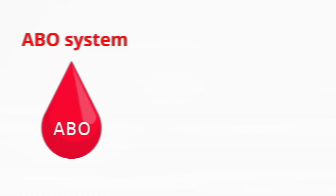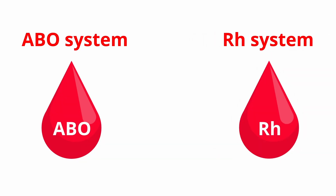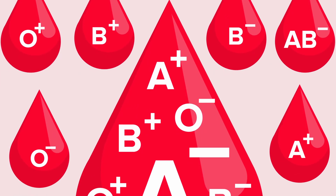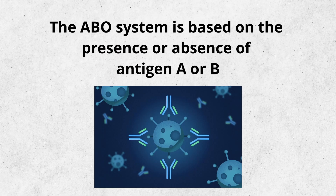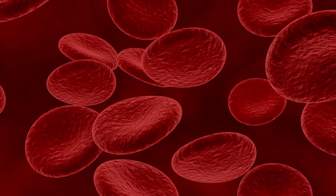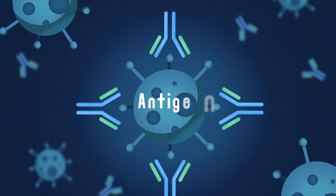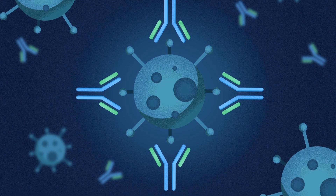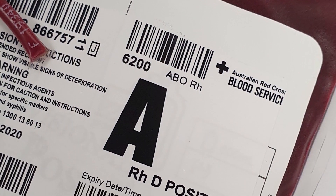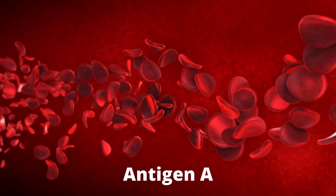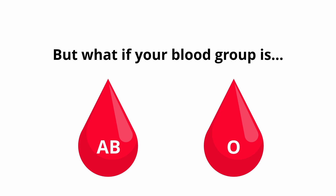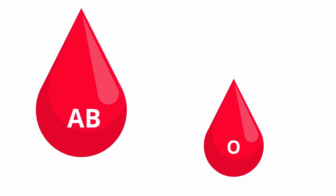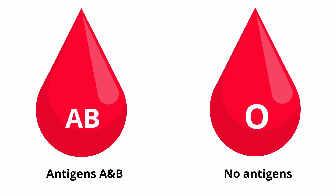The ABO blood group system and the RH system are the two most common, but there are about thirty other blood group systems too. The ABO system is based on the presence or absence of antigen A or B on the surface of your red blood cells. An antigen is a molecule that triggers an immune response. If you have the A blood group, your red blood cells have antigen A, and vice versa for the B blood group. The AB blood group indicates that you have both antigens A and B, whereas the O blood group indicates that you have neither of them.